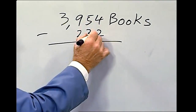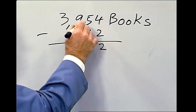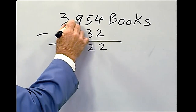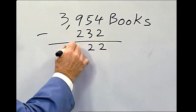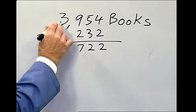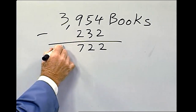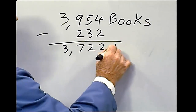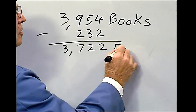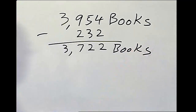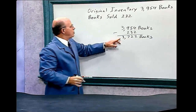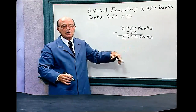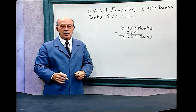4 minus 2 is 2. 5 minus 3 is 2. 9 minus 2 is 7. And 3 minus 0 is 3. So we have 3,722 books left in our inventory.